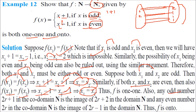For onto: any odd number 2r+1 in N is the image of 2r+2 (since f(2r+2) = (2r+2)−1 = 2r+1). Any even number 2r is the image of 2r−1 (since f(2r−1) = (2r−1)+1 = 2r). So every element in N is covered — f is onto. Therefore f is bijective.